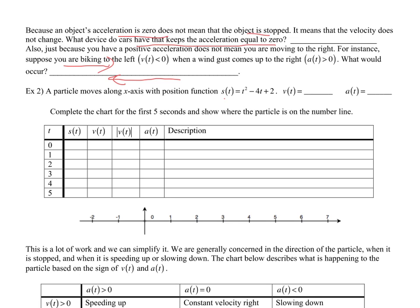Now let's do some calculus. The velocity function is the first derivative of the position function. Using the power rule on a power function, we bring the 2 down: V of T = 2T minus 4. The acceleration is the second derivative of position, or the derivative of velocity, and that gives us a constant 2.